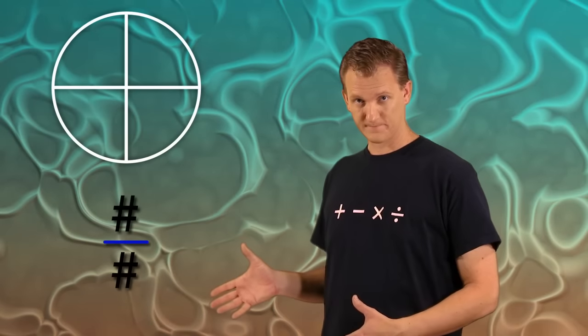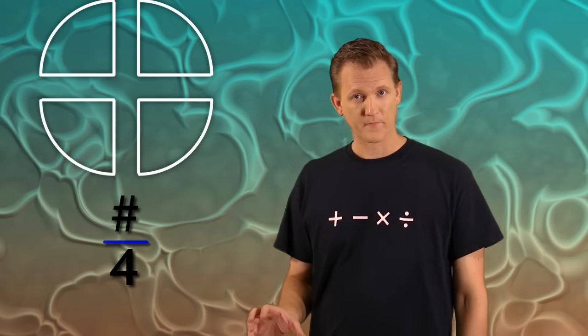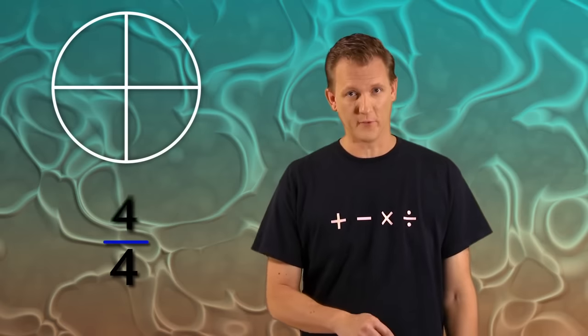For example, let's write a fraction for our drawing here. I divided the circle into four parts, right? So the number on the bottom will be four. And I still have all four of those parts, so the number on top will also be four. I have four out of four parts. That means I still have a whole circle.